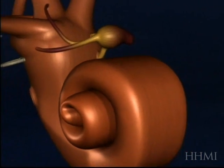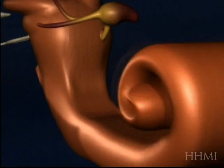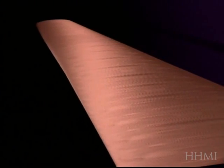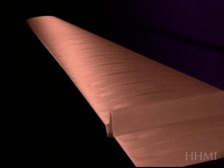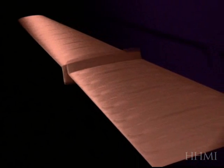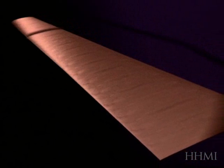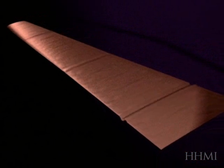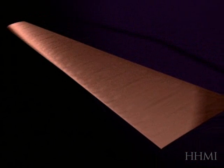Here we are with a view of the cochlea. The cochlea now uncoils and we look at the basilar membrane, and now see what happens when we play individual tones. Now a chord. And finally something really complex.